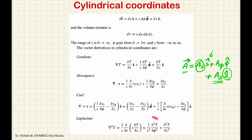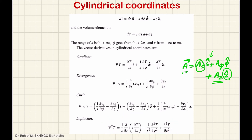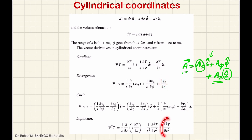Now, we write the Laplacian operator. The z component in the cylindrical system has no change from the Cartesian expression. The gradient, divergence, and Laplacian: the z component is unchanged, and the s and phi components are modified accordingly.